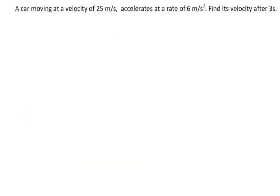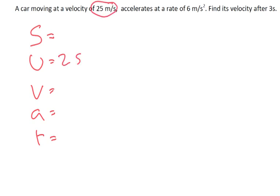So here's our first problem. A car moving at a velocity of 25 meters per second accelerates at a rate of 6 meters per second squared. Find its velocity after 3 seconds. The way I would always try and solve these problems, I'd write s, u, v, a, and t, and look at what I know. The initial velocity is 25 meters per second, the acceleration is 6 meters per second squared, and we want to find the final velocity after a time of 3 seconds.